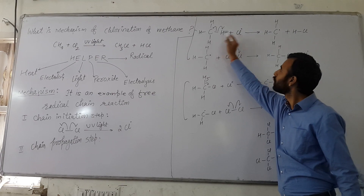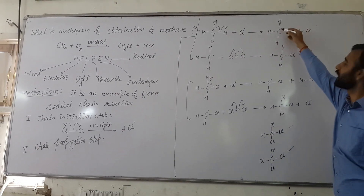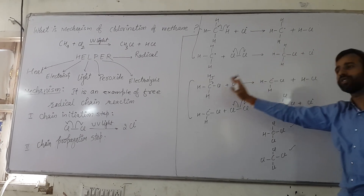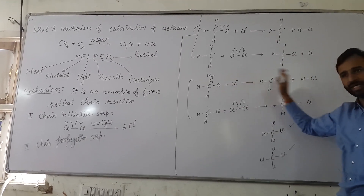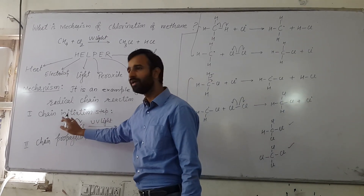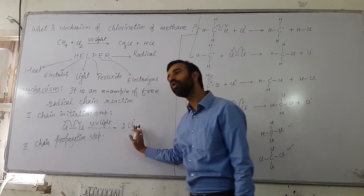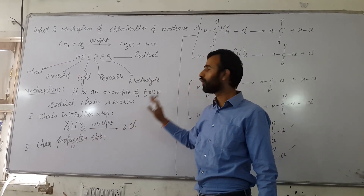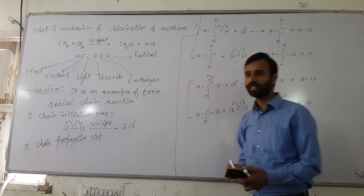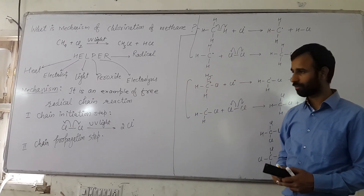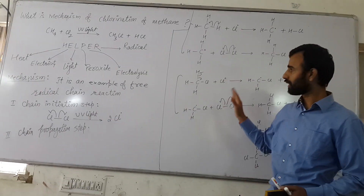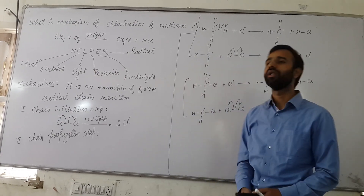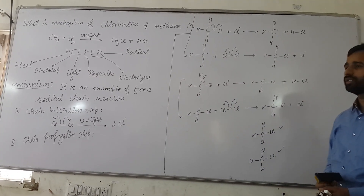In the initiation step, free radicals are generated from neutral molecules. In the propagation step, the number of free radicals remains the same on both sides. In the last step — called the chain termination step — free radicals start combining with each other to give neutral molecules.